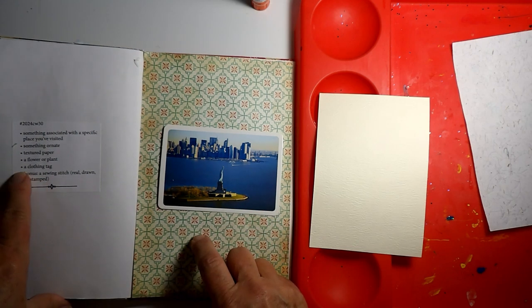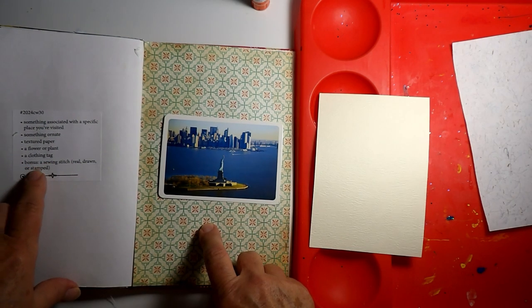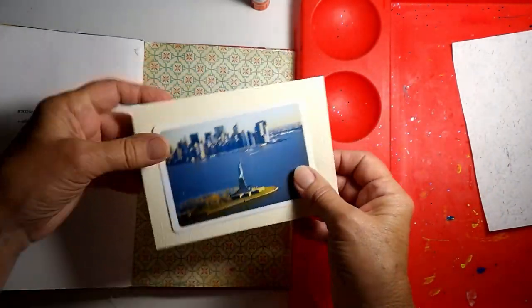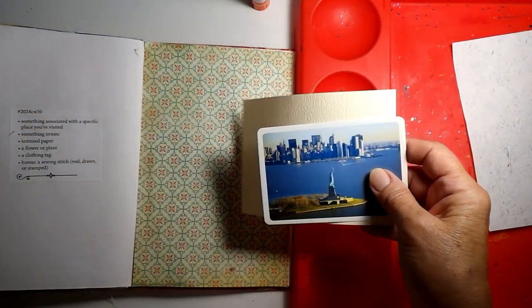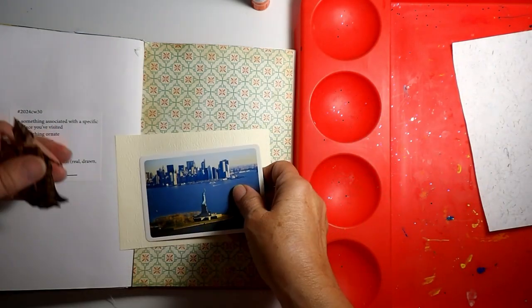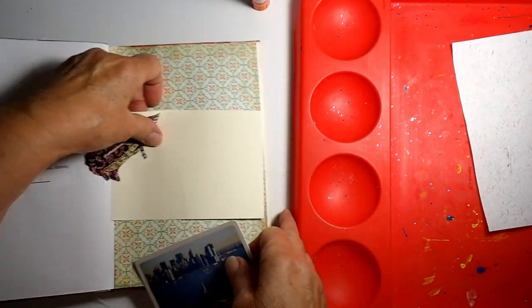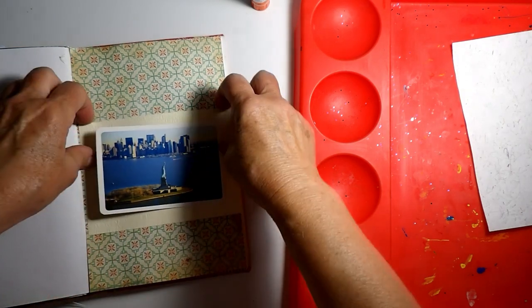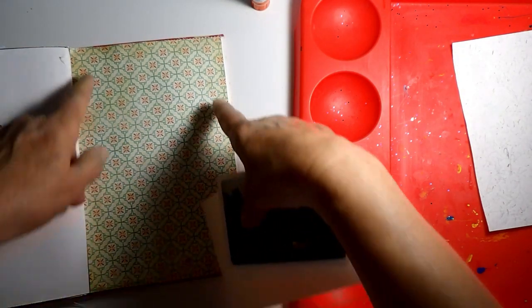I am skipping the clothing tag because I honestly don't have any and then I'm probably going to stitch around this. But before I do anything else I might trim that. I probably am going to trim this down too so that you can see some of this paper around all the edges.